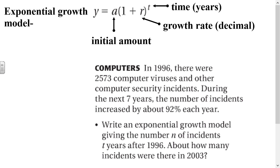Here is the famous exponential growth model — it's just an equation. A is your initial amount. R is your growth rate, always expressed as a decimal, so they'll usually give it as a percent and you'll need to convert it. And t is the time in years. Let's look at an example about computers.